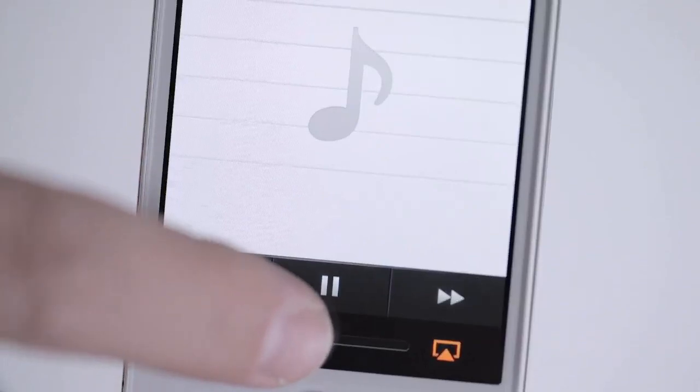You can either control the volume from your music application or on the Beoplay A9 itself. Gently swipe your hand sideways along the top to turn the volume up or down.